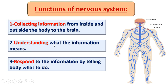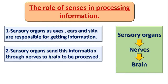Number two: when the information goes to the brain, the brain will understand what this information means — understanding the information. After the brain understands, it will make a response, which means telling the body what it should do. So the three steps are: collecting information from inside and outside the body, understanding the information, and making a response.